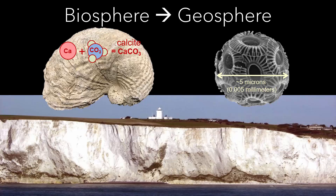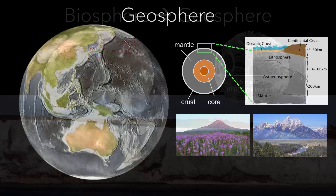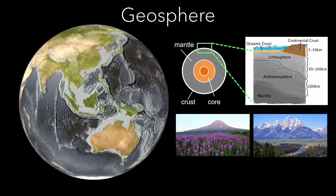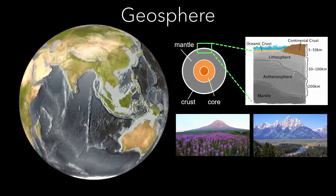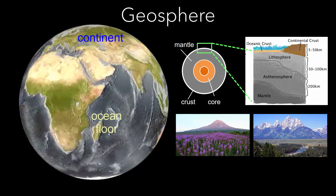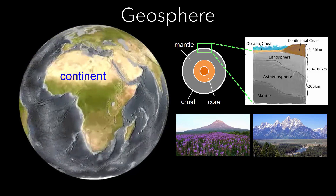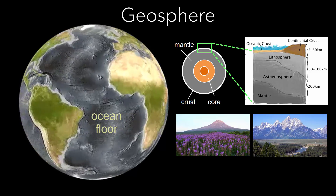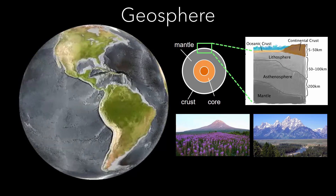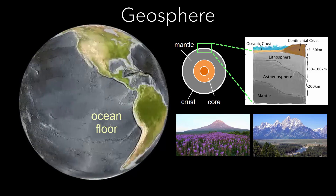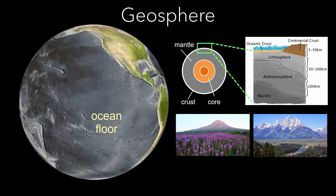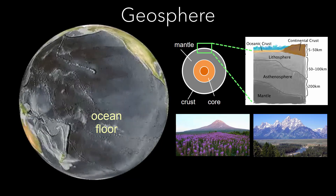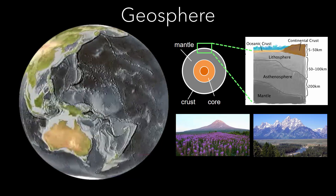Thus, matter moves from the biosphere to the geosphere. The geosphere includes the continents and ocean floors, and the rocks and minerals in Earth's crust, mantle, and core. Most rocks remain in the geosphere for millions of years, making them part of the Earth's largest carbon reservoir.